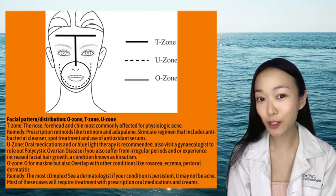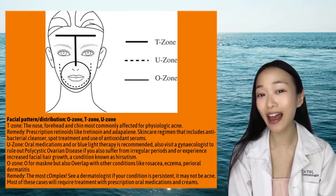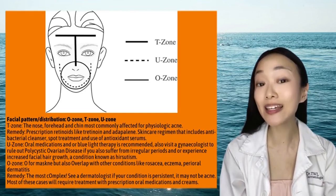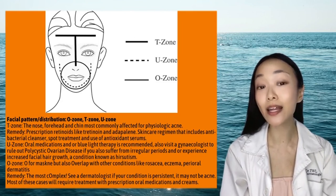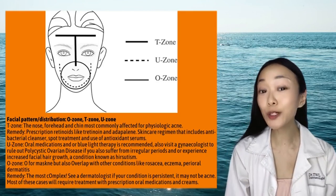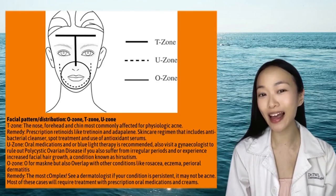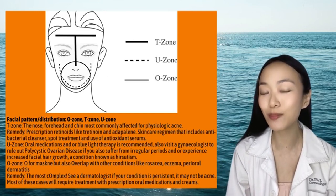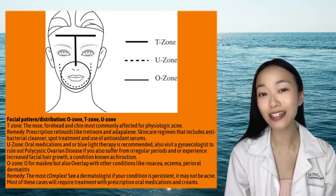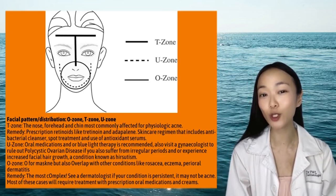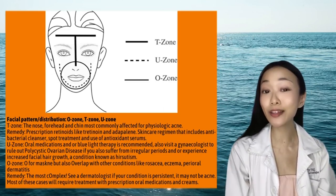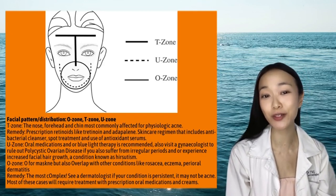This was published in the Journal of the American Academy of Dermatology in 2021. The well-known T-zone, also associated with physiologic acne, affects the nose, the forehead, and the chin area. It's the most commonly affected because of the concentration of oil glands, also known as sebaceous glands. Prescription retinoids like tretinoin and second-generation retinoids like adapalene can be very helpful for comedonal acne that occurs around the T-zone.